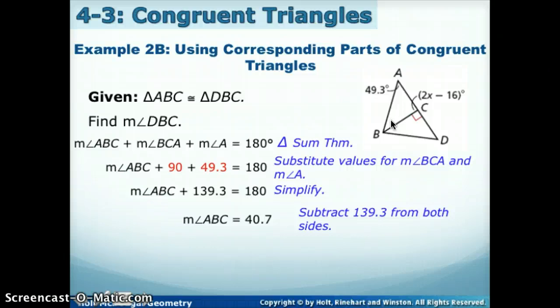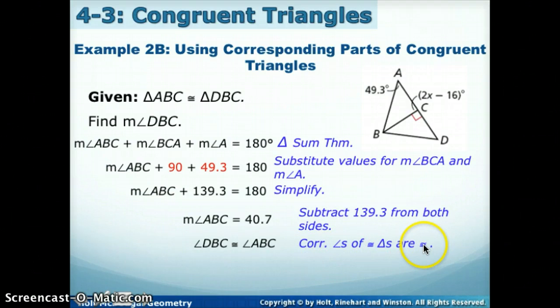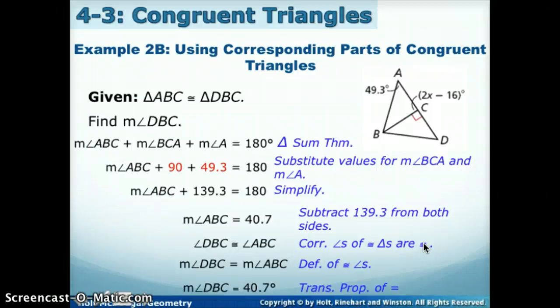Well, I know that this angle is supposed to be the same as this angle, so ABC should be the same as DBC, because corresponding angles of congruent triangles are congruent. So there's really not a name for that theorem, so you just list it out. Notice how we said corresponding angles of congruent triangles are congruent. So if they're congruent, we learned that that also means they're equal. So if ABC is 40.7, well then so is DBC.